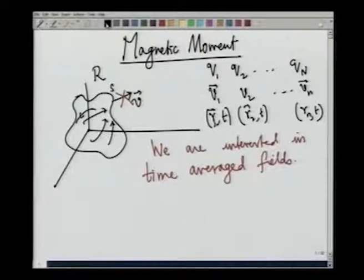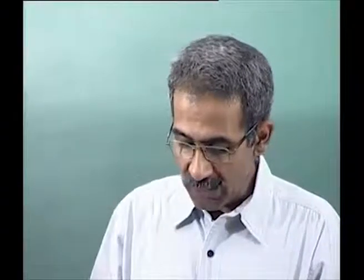Since we are interested in time-averaged fields, these will be expected to be time-independent. Because over one period all the particles come back to their original position — at least very close to their original configuration. Therefore, what we shall do is write down the expression for the vector potential A coming from each individual charge, and then proceed to do the averaging. As I mentioned, this is not part of the usual treatment, but it is worth it because we will see the beautiful connection between angular momentum and magnetic moment.